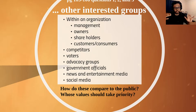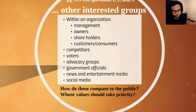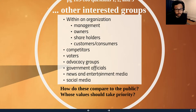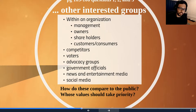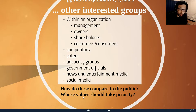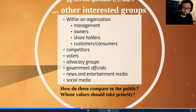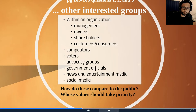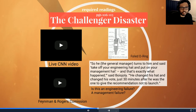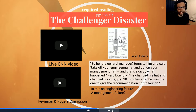How do you decide what to do when these groups have conflicting interests? Whose values should take priority? Should we put the public's interests over and above those of management, shareholders, consumers, or media? Let's deal with a concrete case now. This is our first major engineering disaster: the Challenger explosion.